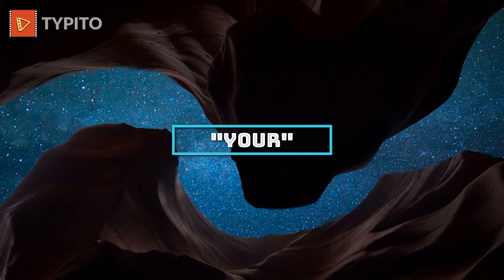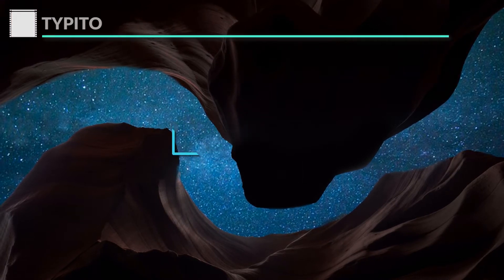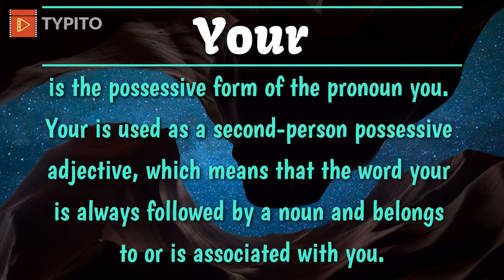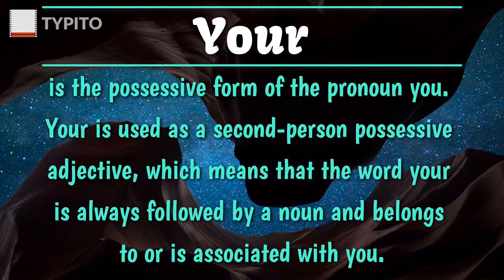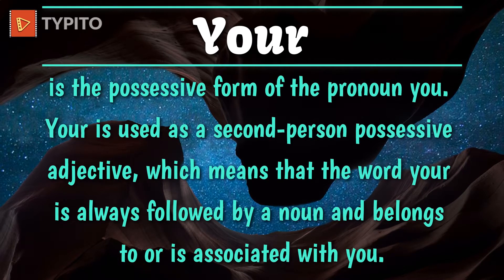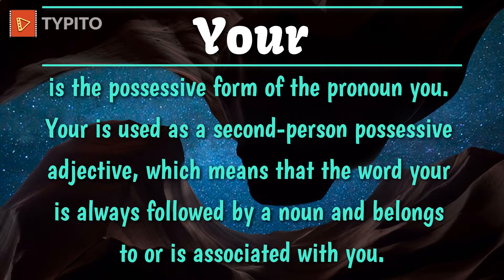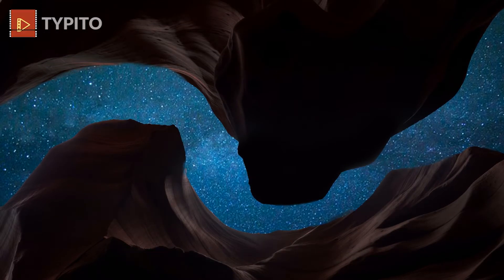So the word 'your', Y-O-U-R, is the possessive form of the pronoun 'you'. 'Your' is used as a second person possessive adjective, which means that the word 'your' is always followed by a noun and belongs to or is associated with you.